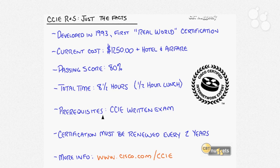The prerequisite for this exam is only the CCIE written exam, which at the time of this recording is around $300 to take. You do not have to have a CCNA or a CCNP — you can go straight for the CCIE. However, most people will get the other certifications along the way as part of their study process. This certification must be renewed every two years or it will expire.